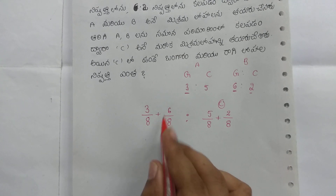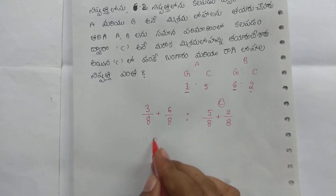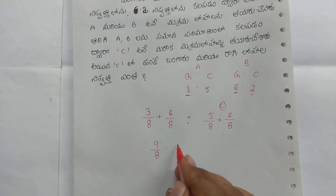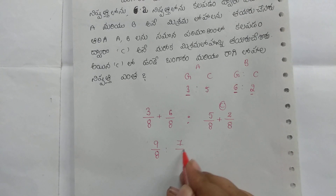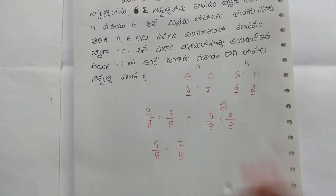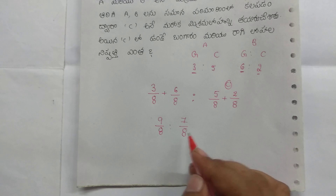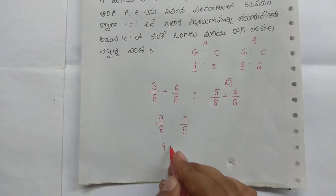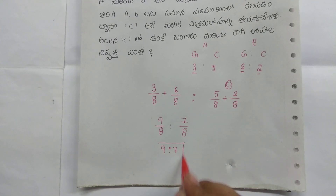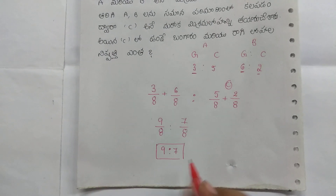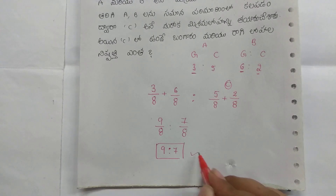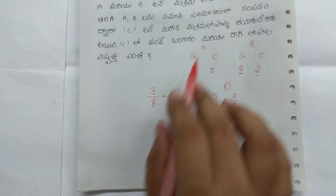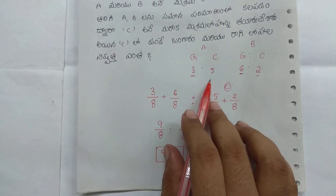The final answer is 9 to 7. The answer is verified. The gold and copper ratio in the combined alloy C is 9 to 7.